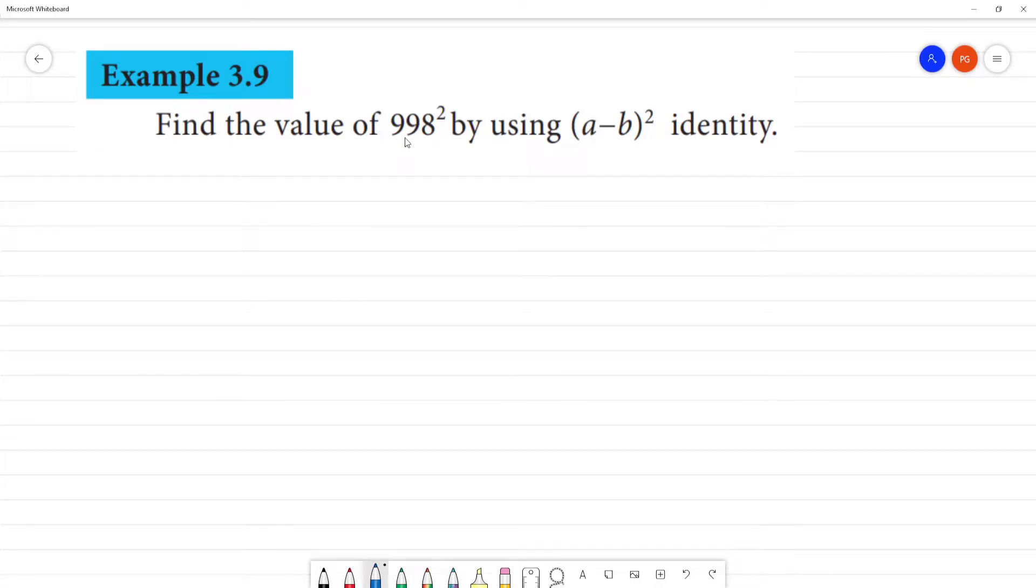Find the value of 998 square by using the identity A minus B whole square. So what is A minus B whole square formula? A square minus 2AB plus B square.